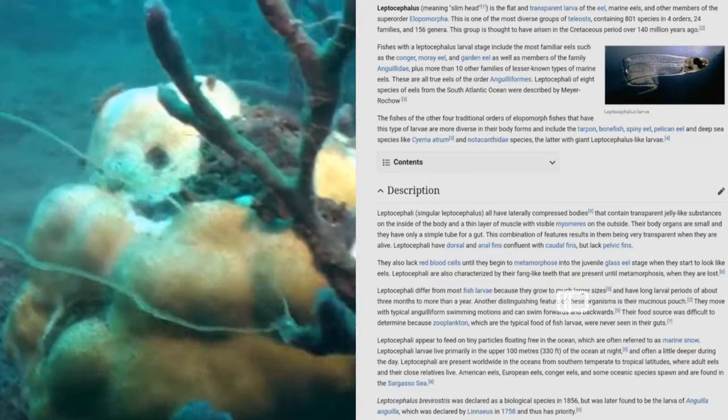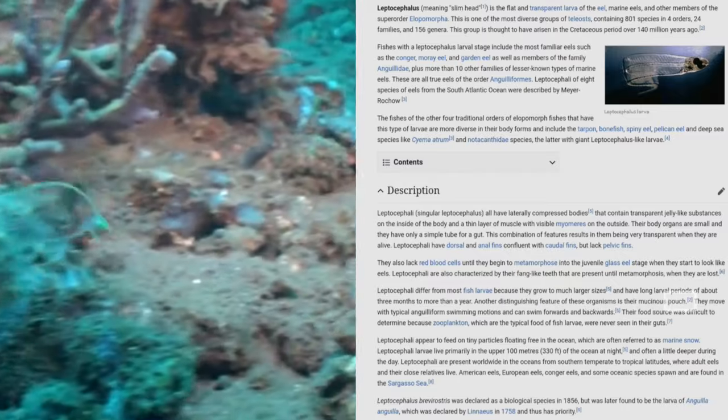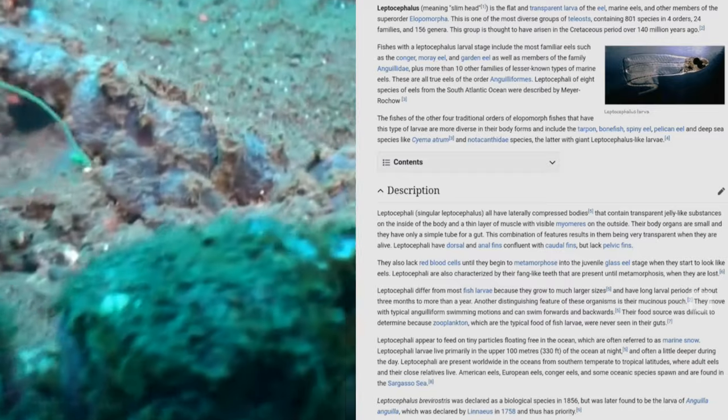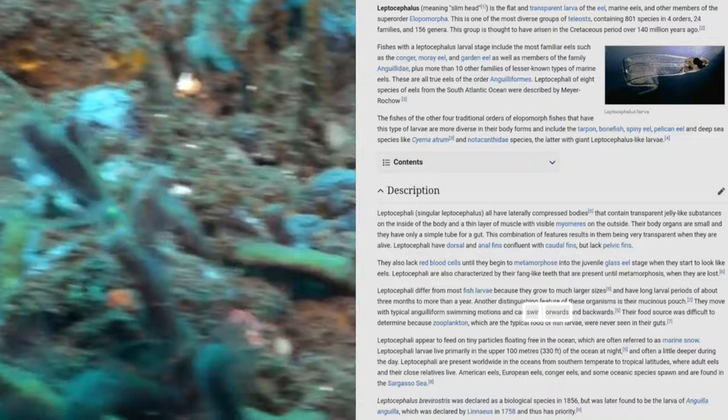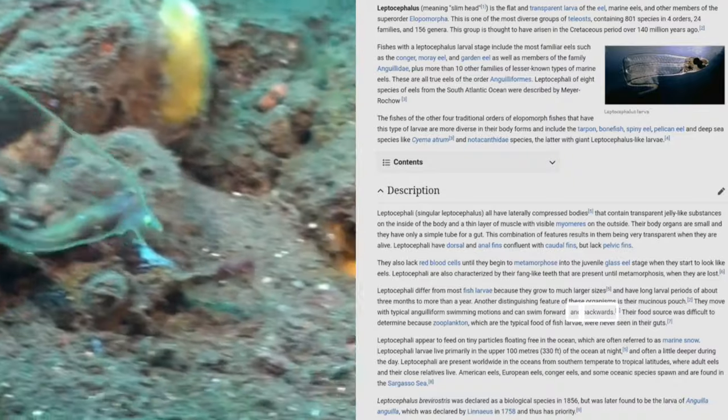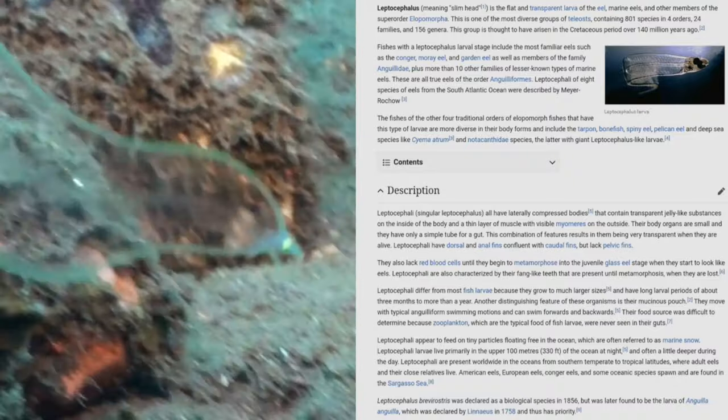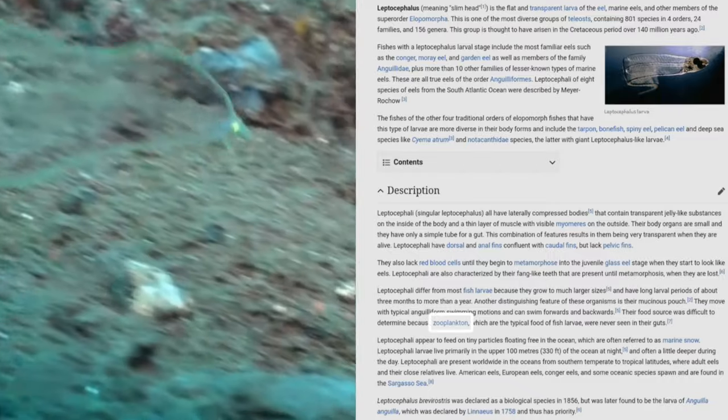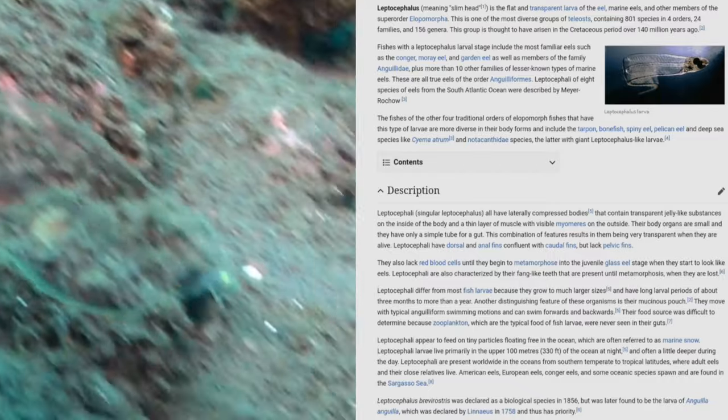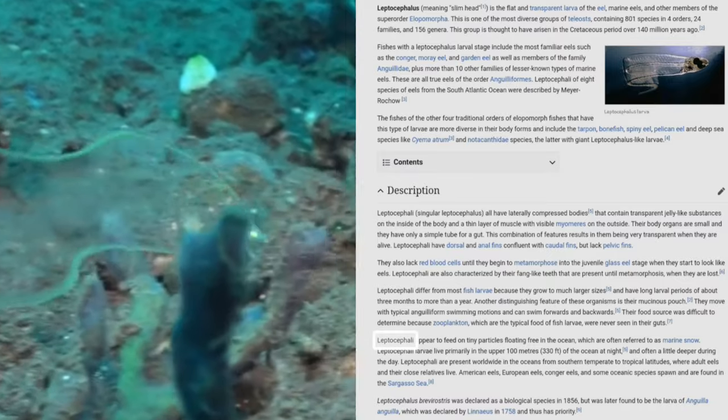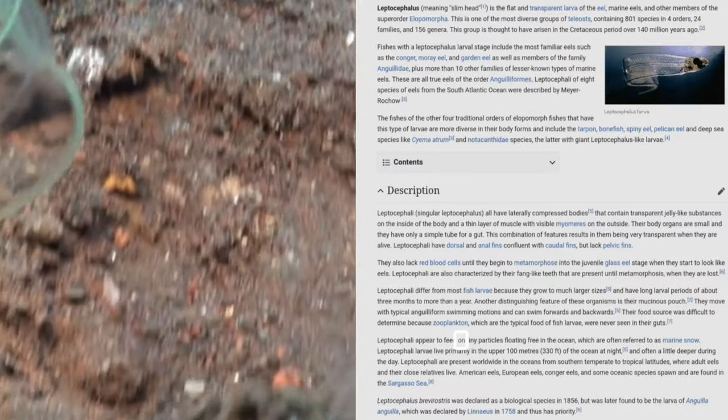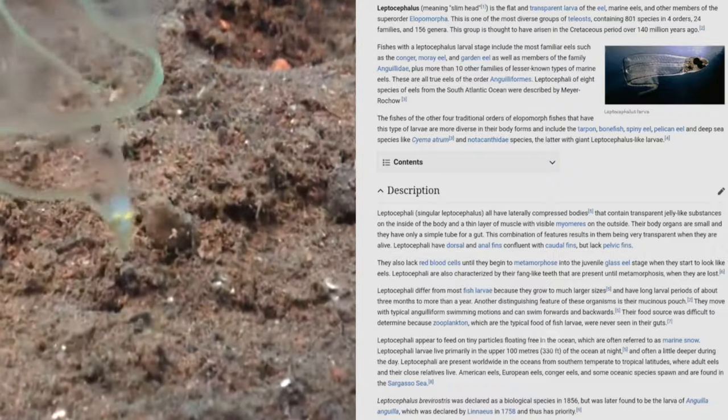Another distinguishing feature of these organisms is their mucinous pouch. They move with typical anguilliform swimming motions and can swim forwards and backwards. Their food source was difficult to determine because zooplankton, which are the typical food of fish larvae, were never seen in their guts. Leptocephali appear to feed on tiny particles floating free in the ocean, which are often referred to as marine snow.